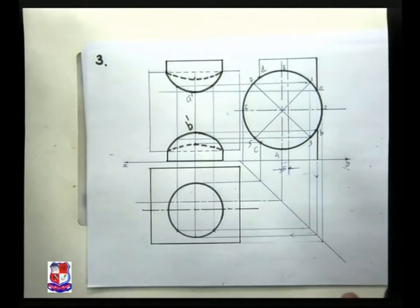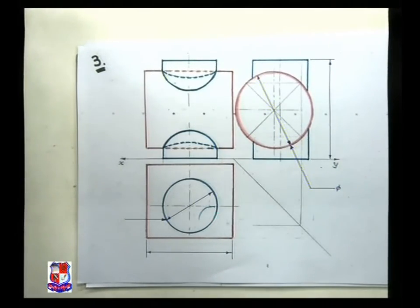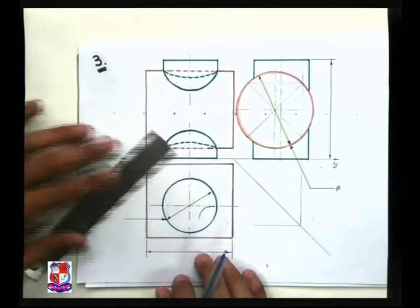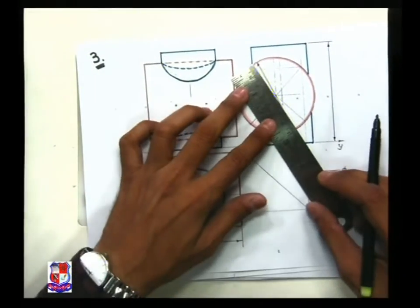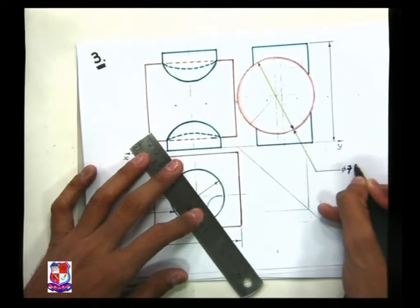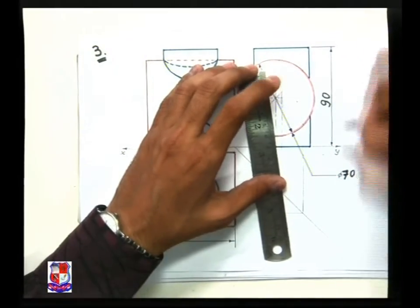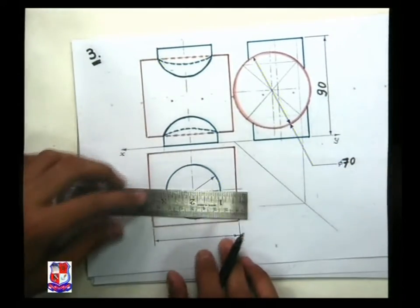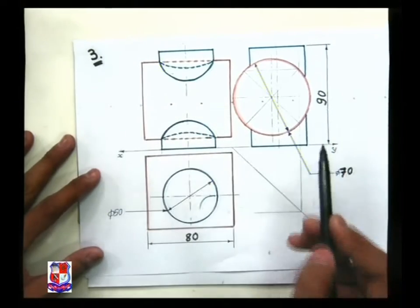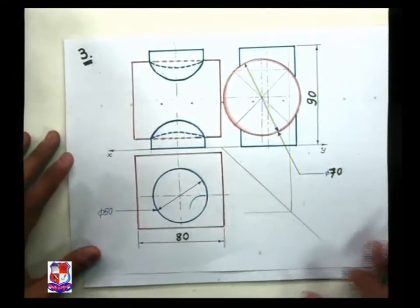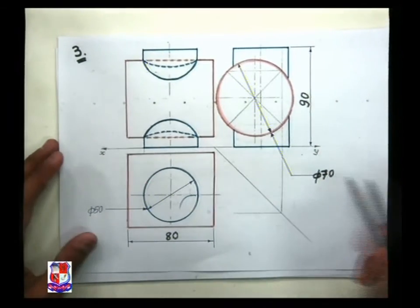So this is about the views of this solid — it could be drawn like this. Here, a 1:1 scale is employed, so we can insert the dimensions. This diameter is 50 mm — you can write here Φ50. This diameter of this cylinder is 70 mm — you can write Φ70 over here. Similarly, this height is 90 mm — you can write 90 here. And this width is 80 mm — you can write 80 mm here.